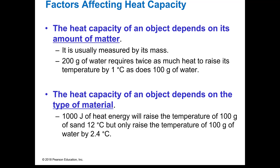The heat capacity of an object depends on how much you have, usually measured by its mass. So 200 grams of water requires twice as much heat to raise its temperature as 100 grams of water — it's directly proportional. Heat capacity also depends on the type of material. Some things have a very different heat capacity, like water and sand. It takes a lot more heat to raise the temperature of water the same amount as it would for sand.